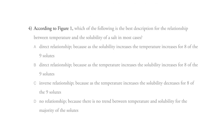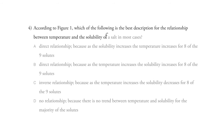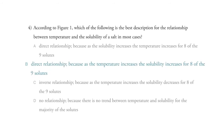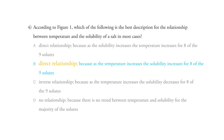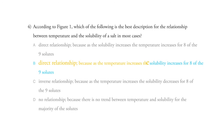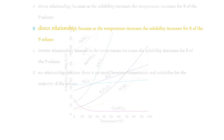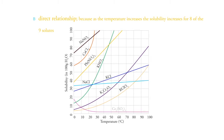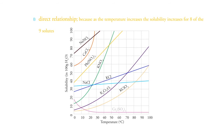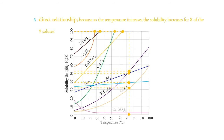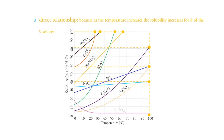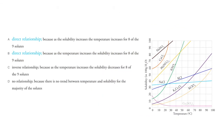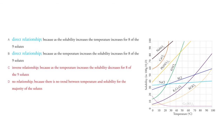Number four: according to figure one, which of the following is the best description for the relationship between temperature and the solubility of a salt in most cases? Answer B is the best answer. There's a direct relationship because as the temperature increases, the solubility increases for eight of the nine solutes. We have increased temperature and for all but one, for these other eight, the trend is that as the temperature goes up, the solubility goes up — the water solution can hold more salt. That means it's a direct relationship, so we can cross out no relationship and inverse relationship.